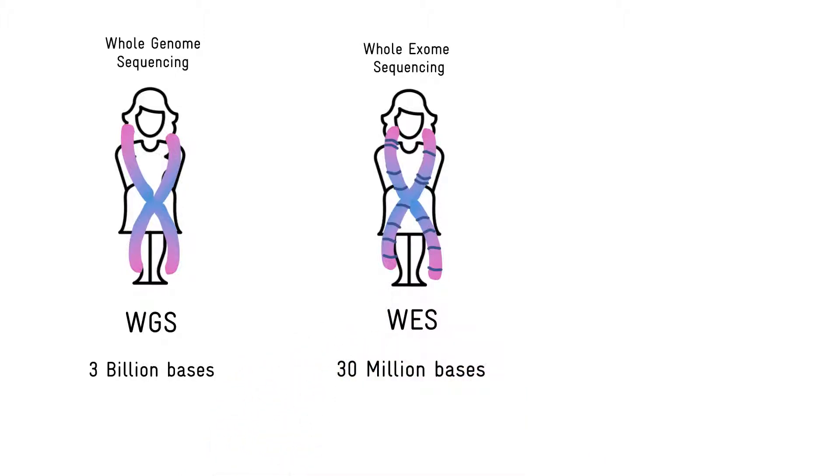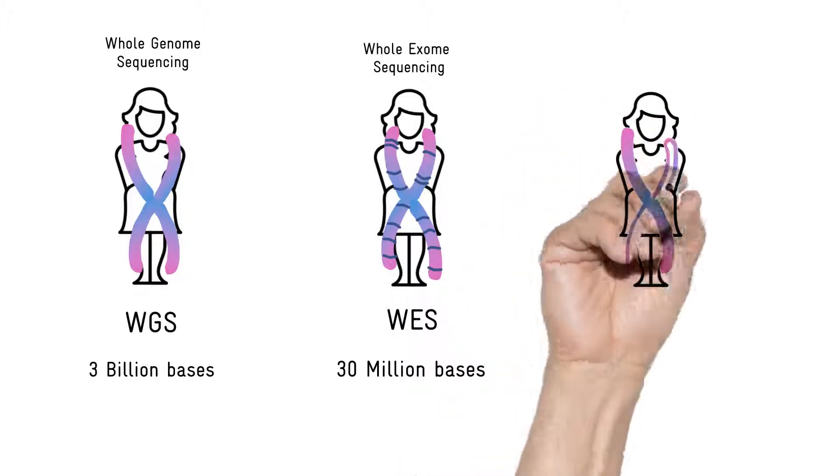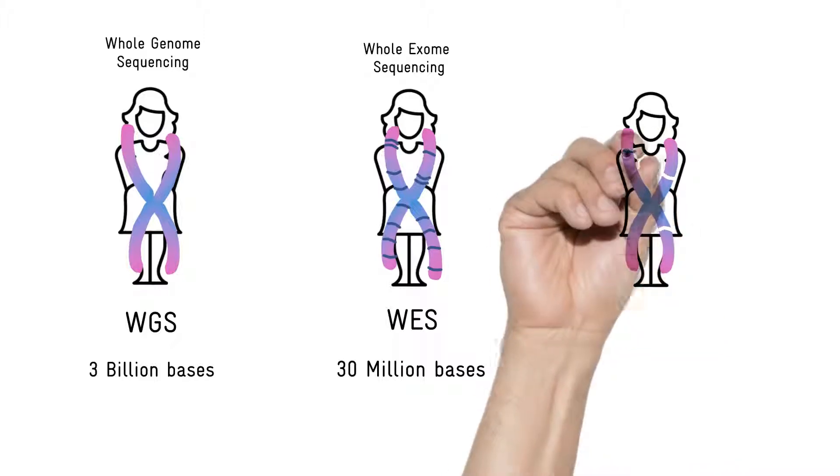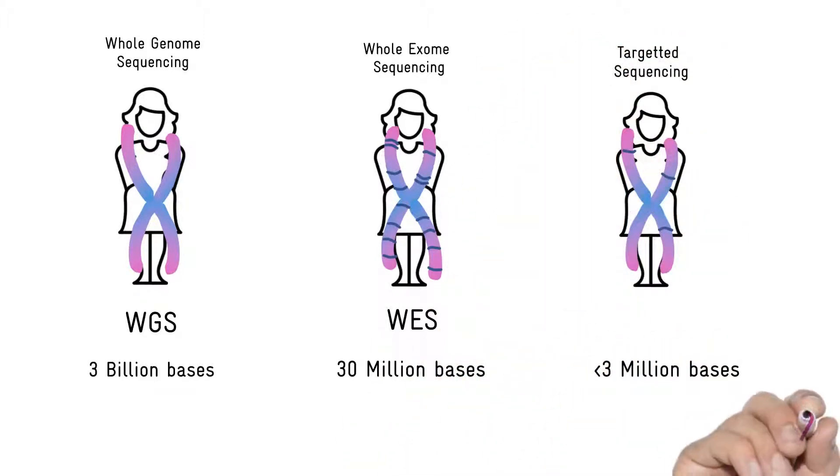Then, even more targeted and precise than that, NGS protocols can target specific genes. It's possible to hone in on a collection of specific genes and sequence them only. This is known as targeted sequencing, and it's a very powerful tool for investigating disease.